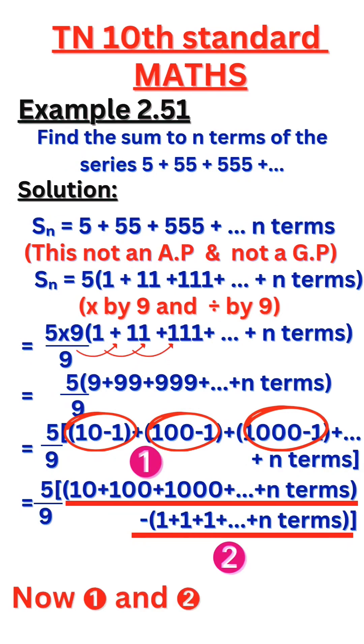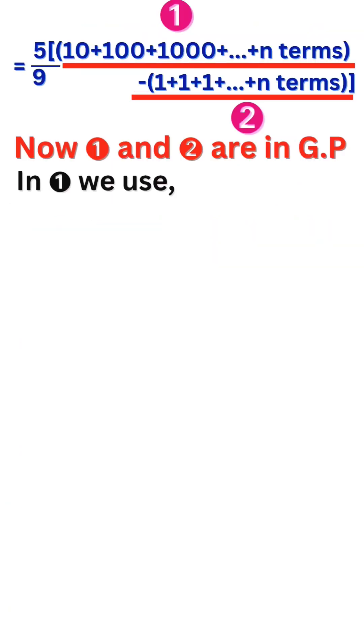Now equation 1 and equation 2 are in a GP. In first equation we use S_n equals a times r to the power n minus 1 divided by r minus 1, because common ratio r is greater than 1.